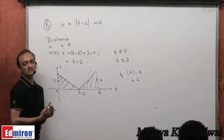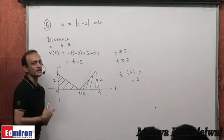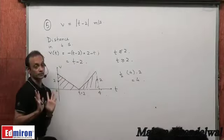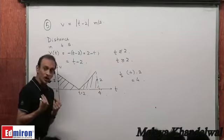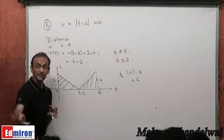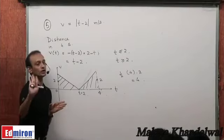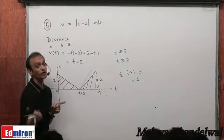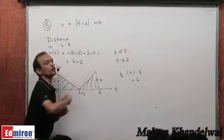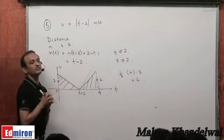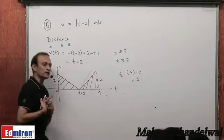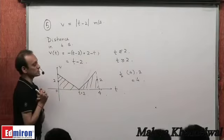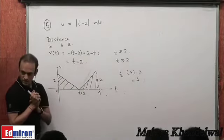Displacement equals distance here because the direction of motion has not changed. The direction hasn't changed because the sign of velocity has not changed — V remained positive throughout. If V had changed sign, the direction of motion would have changed.